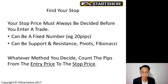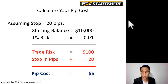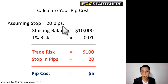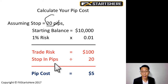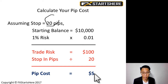You always need to count the pips from the entry price to the stop price — that gives you your stop loss in pips. For me, my stop loss is 20 pips most of the time, and that's what I'll use in my examples. Step three: how do we calculate your pip cost? Assuming your stop is 20 pips and you have a starting balance of $10,000 with a 1% risk, that means we risk a maximum of $100 per trade. So: $100 divided by 20 pips equals a pip cost of $5.